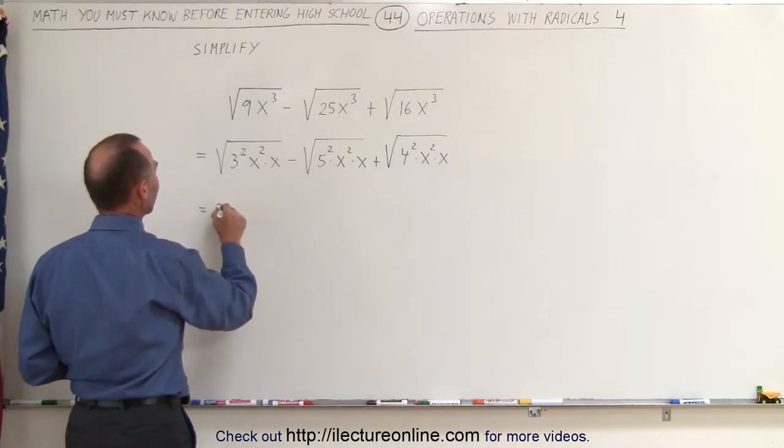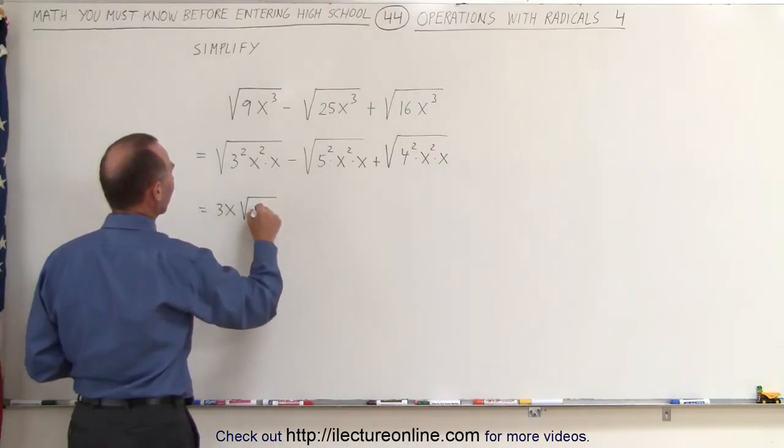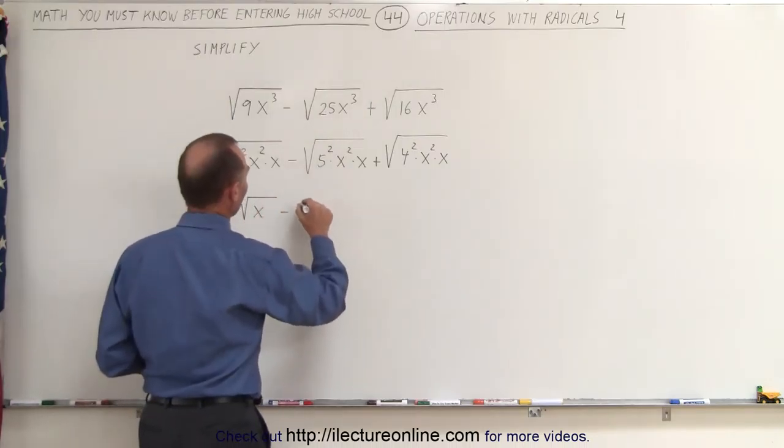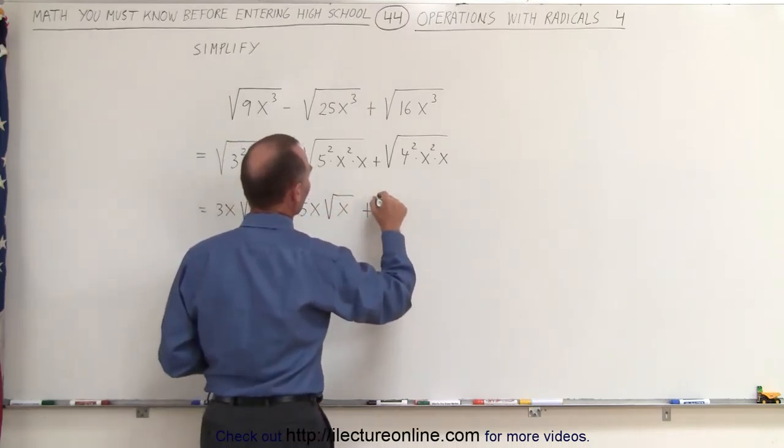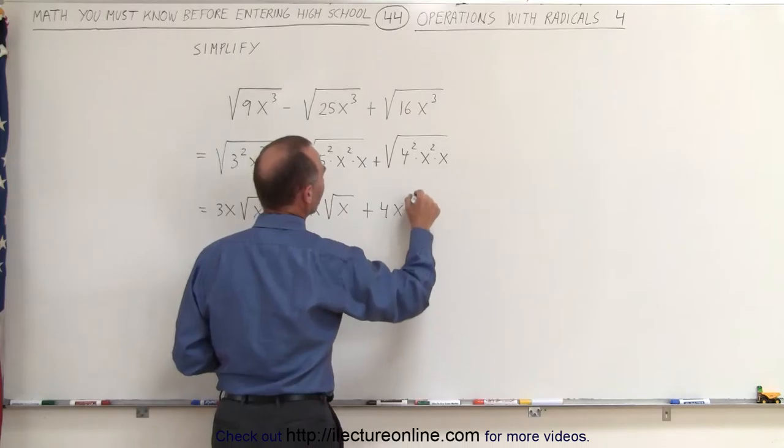So this is equal to 3 times x times the square root of x, minus 5 times x times the square root of x, plus 4 times x times the square root of x.